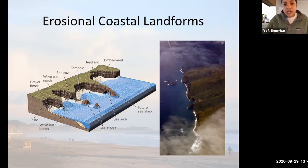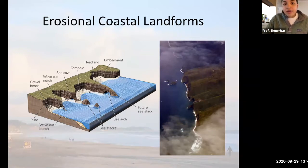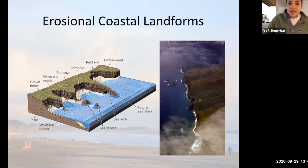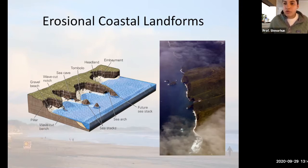Coastal erosion still occurs but is slowest in areas like embayments, where wave energy is diffused over broader areas. Embayments are essentially low-lying areas where you're not necessarily jutting out into the ocean, but you can still get coastal erosion and coastal deposition. However, the dominant style that takes over in headlands is coastal erosion.